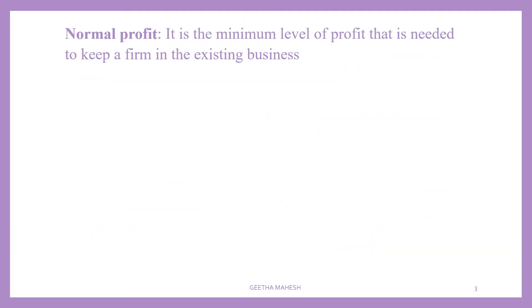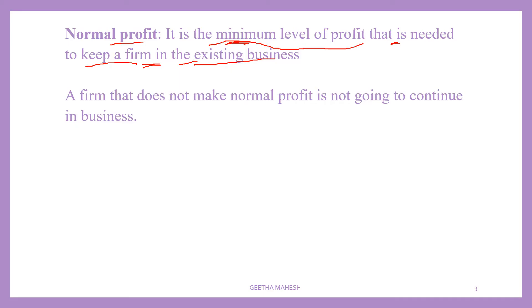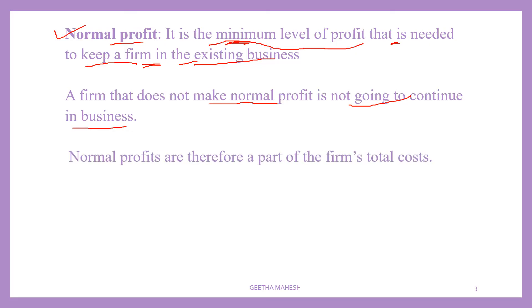Now let us discuss what is normal profit. Normal profit is the minimum level of profit that is essential or needed to keep a firm in its existing business. If a firm needs to continue its business, it must earn normal profit. A firm that does not make normal profit is not going to continue in business — it will close. Normal profit, therefore, is a part of the firm's total cost.